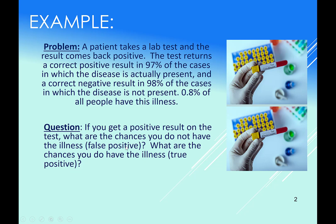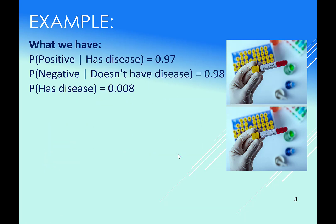There are false positives and true positives. A false positive is when the test result says they have the disease, but they don't actually. A true positive is when the test result says they do have the disease, and they actually have it. Here are the conditional probabilities we actually have: given somebody has a disease, the odds of them testing positive is 97%; given they don't have the disease, the odds of them testing negative is 98%; and 0.8% of the population actually have the disease, so that probability is 0.008.